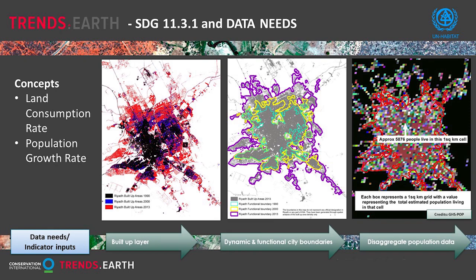The third important component is to look at population change. We need to see how the population is changing inside each dynamic boundary we've created using the built-up area analysis. The best way is to go to the national statistics offices, which have high-resolution data at the household level, and find out how many people are living within those boundaries in that particular year. However, this information is sometimes difficult to get in some countries, or the years of analysis may not align directly to national censuses.